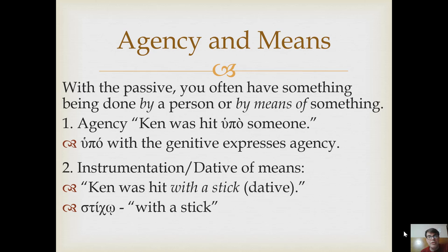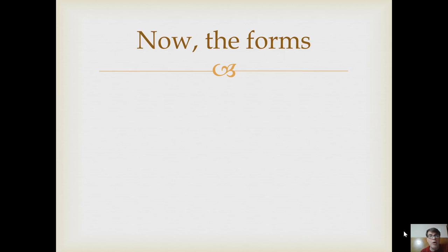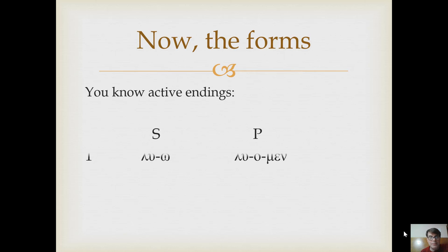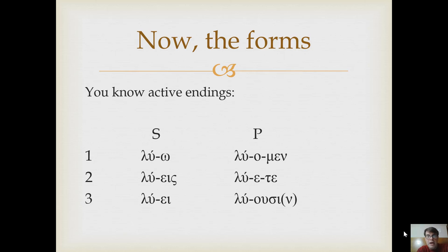A dative used in this context is what's called a dative of means, and expressions like 'with a stick' or 'by means of a stick' come out of the dative ending without a separate word for 'with.' These are two important categories that go along with the passive voice. If you take competency exams at some seminaries, these will be things you'll need to identify: agency is hupo with a genitive, and the dative of means — or instrumental dative — is for non-personal instruments. Let's review the active endings.